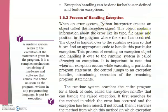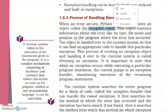Now let's look at the process. When an error occurs, the Python interpreter creates an object called the exception object. As soon as there is an error, the Python interpreter — the shell — creates this exception object. This object contains information about the error, such as its type, the file name, and the position in the program where the error has occurred — for example, line 1, line 3, or line 4.